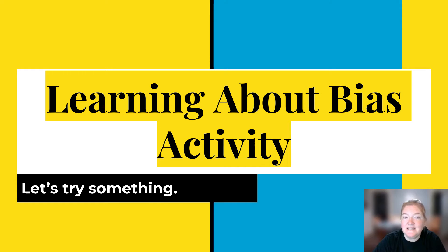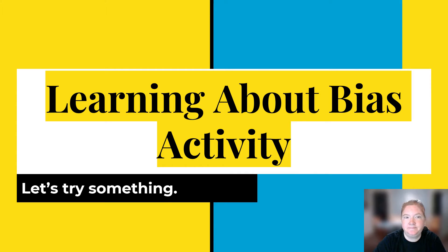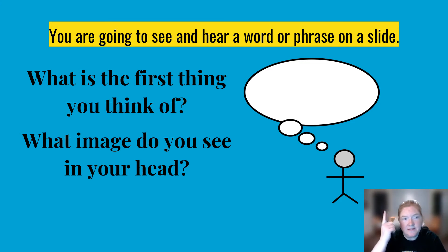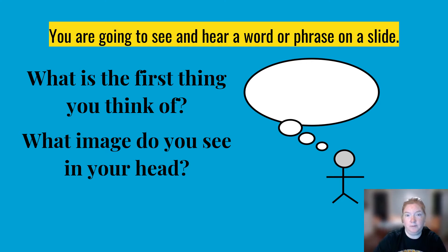Today's lesson is learning about bias — we're going to do an activity. You're going to see and hear a word or phrase on the slide. What I want you to do is think: what is the first thing you think of? What image do you see in your head? Hold that thought.